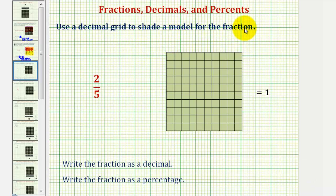We want to use a decimal grid to shade a model for the fraction two-fifths, then write the fraction as a decimal, and then write the fraction as a percentage.